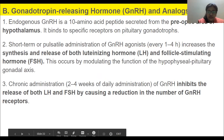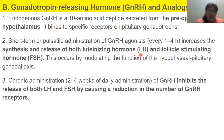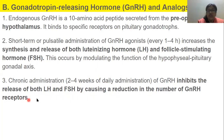LH is the hormone that triggers ovulation — the egg is released from the ovary. FSH — follicle stimulating hormone — helps the follicle to develop. However, chronic administration of GnRH — two to four weeks of daily administration — inhibits the release of both LH and FSH by causing a reduction in the number of GnRH receptors.